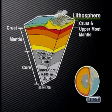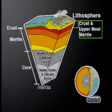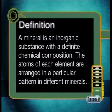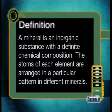The bit we are interested in today is the lithosphere. The lithosphere is made up of the solid, rocky crust and the uppermost part of the mantle closest to the surface. Now that we know a little bit more about the structure of the lithosphere, we can start our investigation of how the minerals came to form here. We can define a mineral as an inorganic substance with a definite chemical composition. The atoms of each element are arranged in a particular pattern in different minerals. I had an opportunity to speak to Professor Terence McCarthy to find out a little bit more about these fascinating processes that cause minerals to form in the lithosphere.